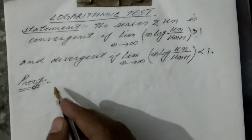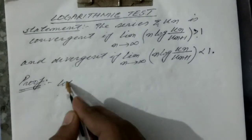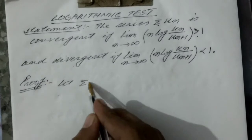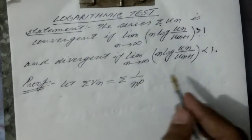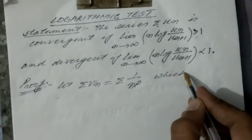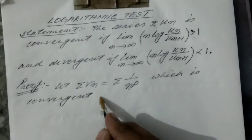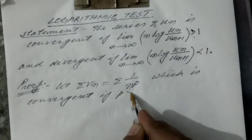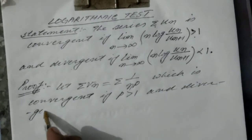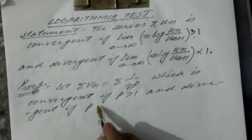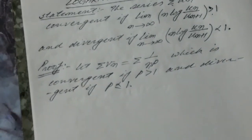Now let us prove this. First, we let sigma v_n equal sigma 1/n^p, which is convergent if p is greater than 1, and divergent if p is less than or equal to 1, by the p-series test. Now, Case 1.